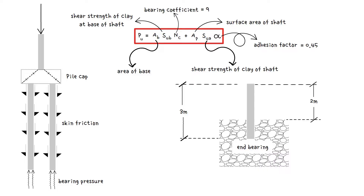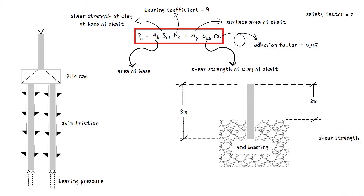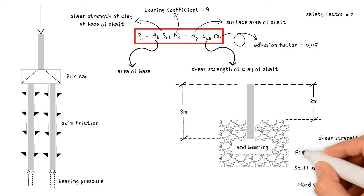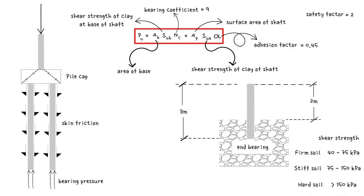To compare capacity with unfactored working loads, a safety factor of 2 may be used. Shear strength values for soil that are commonly used: for hard soil, shear strength is greater than 150 kN/m²; for stiff soil, between 75 to 150 kN/m²; and for firm soil, between 40 to 75 kN/m².